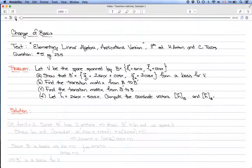In this example, we're looking at bases and transition matrices. We're given a vector space V spanned by the vectors sin x and cos x. In the first part of the problem, we want to show that the vectors 2 sin x plus cos x and 3 cos x form a basis for V.